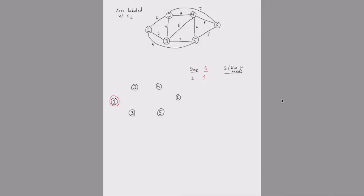At iteration 1, just node 1 is in our tree, and nodes 2, 3, 4, 5, and 6 are not in the tree. Looking at the arcs going from S to S-bar, we have arc 1-2, arc 1-3, and arc 1-5 in the cut. We need to determine which of these three arcs is the cheapest.